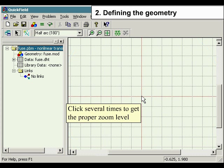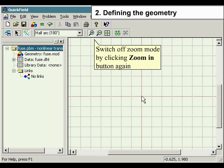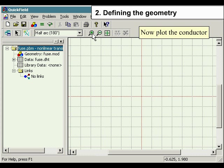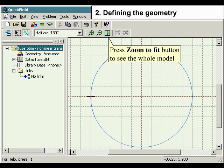Click several times to get to the proper zoom level. Switch off the zoom-in mode by clicking the zoom-in button again. Now plot the conductor. Press Zoom to Fit button to see the whole model.